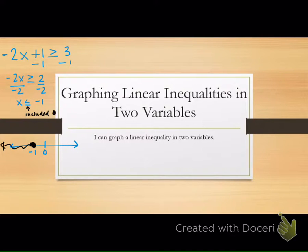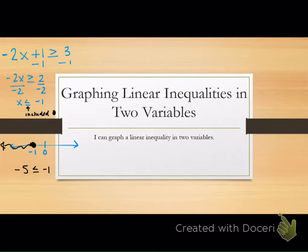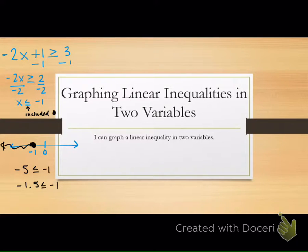If I plugged in negative 5, is negative 5 less than or equal to negative 1? Yes — it makes your statement true. So anything to the left makes your statement true. If I plugged in negative 1 and a half, that's also to the left of it, so we shade that way because it makes the statement true. We're going to look at this now on a graph in two variables. There's still going to be shading and some form of open and closed circles.